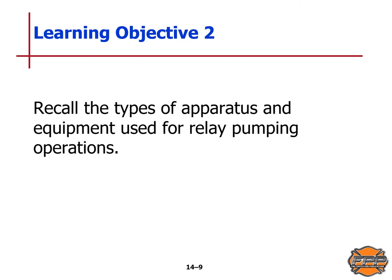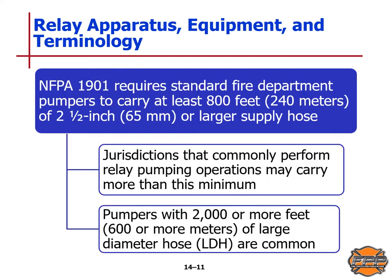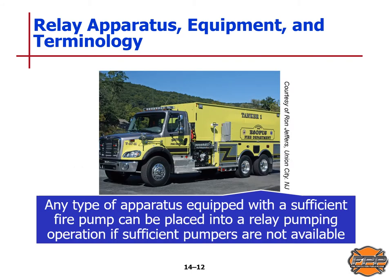Learning Objective 2. In this section, we will recall the different types of apparatus and equipment used for relay pumping operations. A successful relay pumping operation requires various types of apparatus, hose, and equipment. NFPA standard 1901 requires standard fire department pumpers to carry at least 800 feet or 240 meters of two-and-a-half inch or 65 millimeter or larger supply hose. Jurisdictions that commonly perform relay operations may carry more than this minimum. Pumpers with 2,000 or more feet or 600 or more meters of large diameter hose are common. Any type of apparatus equipped with a sufficient fire pump can be placed into a relay pumping operation if sufficient pumpers are not available.